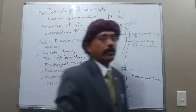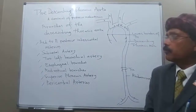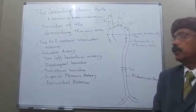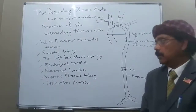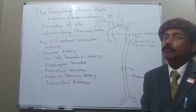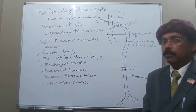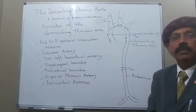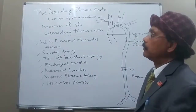Let us summarize the branches again: the 3rd to 11th posterior intercostal arteries, the subcostal artery, two left bronchial arteries. The right bronchial artery usually arises from the upper left bronchial artery or from the right third posterior intercostal artery. Esophageal branches, multiple mediastinal branches supplying loose connective tissue and lymph nodes, the superior phrenic artery supplying the upper diaphragm, and pericardial arteries supplying the fibrous pericardium.